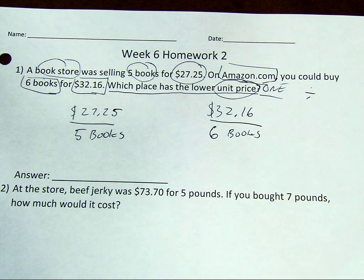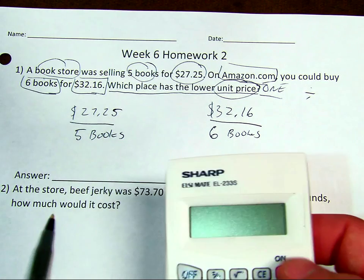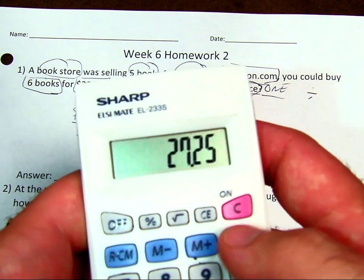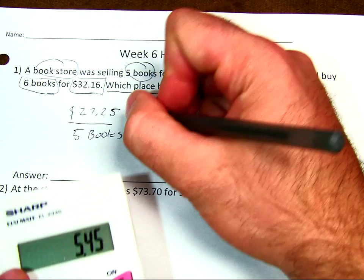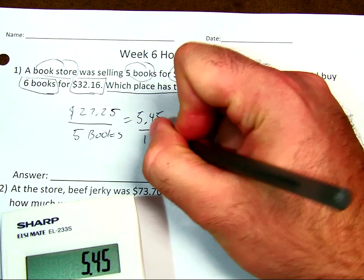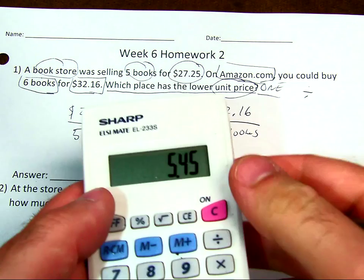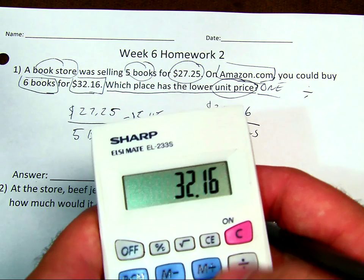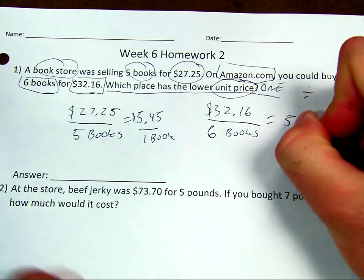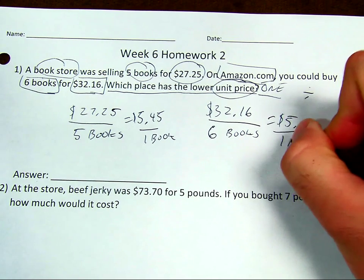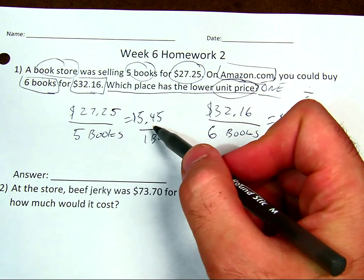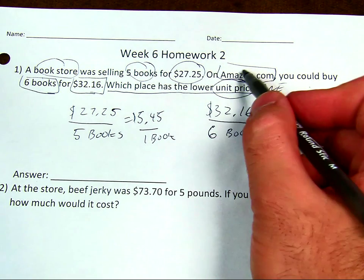Now I need to figure out which one has the lower unit price. Using my calculator: $27.25 divided by 5 equals $5.45 for one book. My other one — Amazon — is $32.16 divided by 6 books, which equals $5.36 for one book.